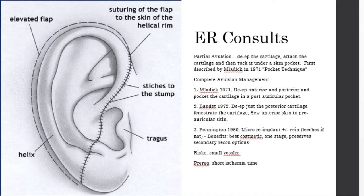A more sophisticated approach is the Baudet technique from 1972: de-epithelialize the posterior cartilage and make fenestrations in the cartilage to assist with blood supply, then suture it back in place with a skin flap so the suture line is offset. This would require additional surgeries to lift the ear up and skin graft the posterior aspect after an appropriate blood supply has developed.